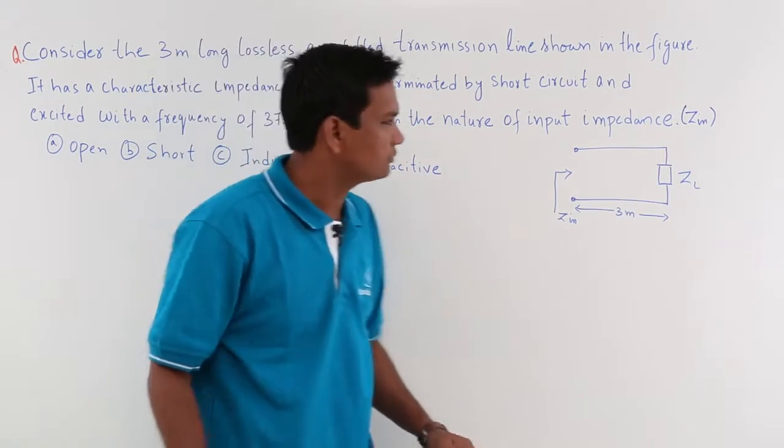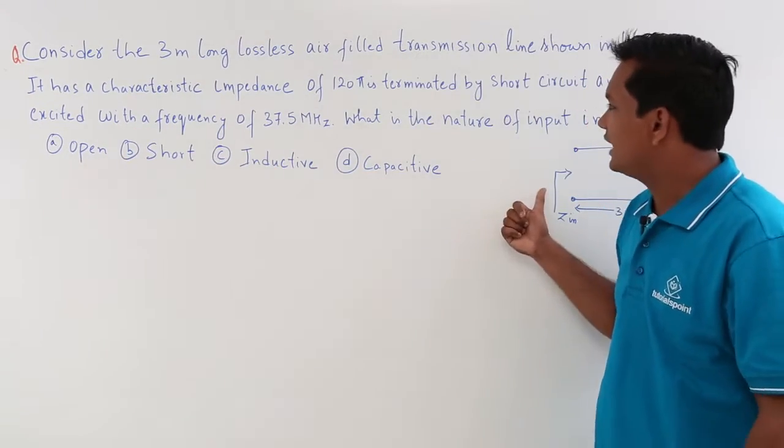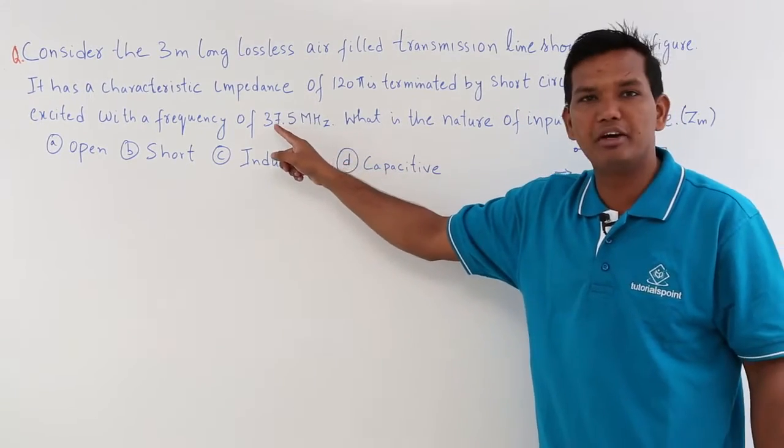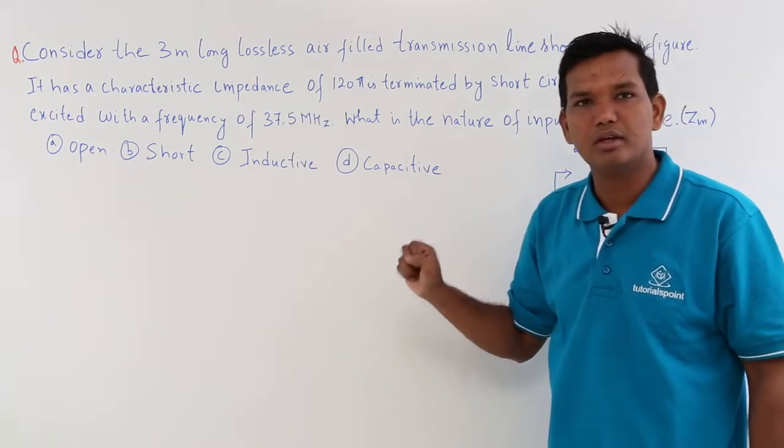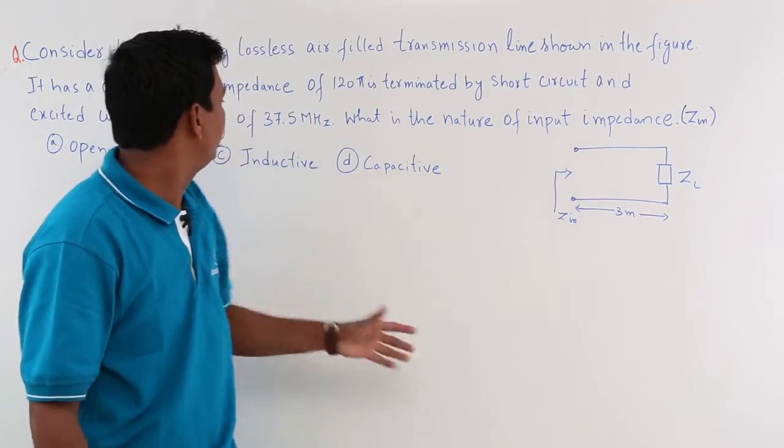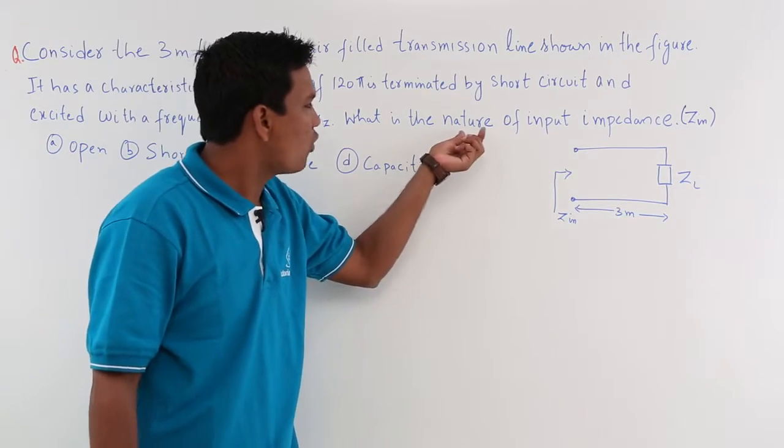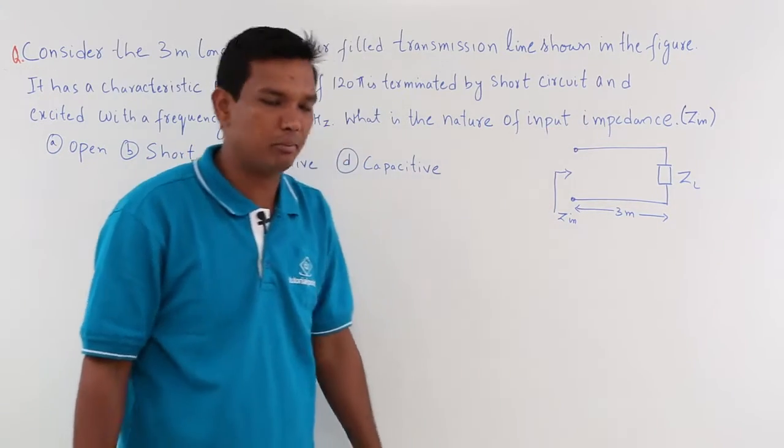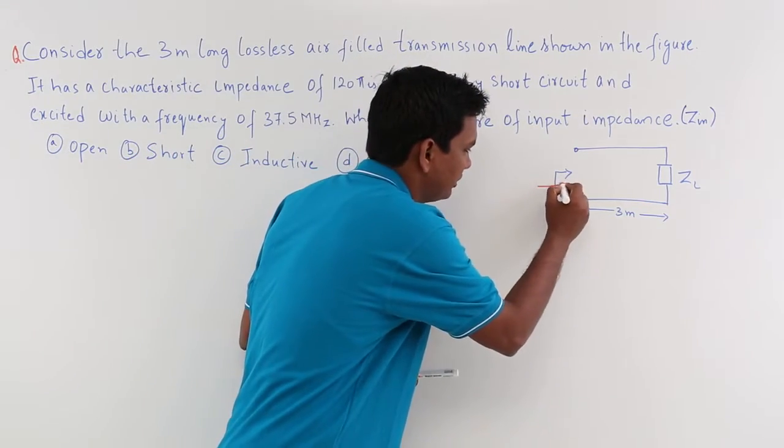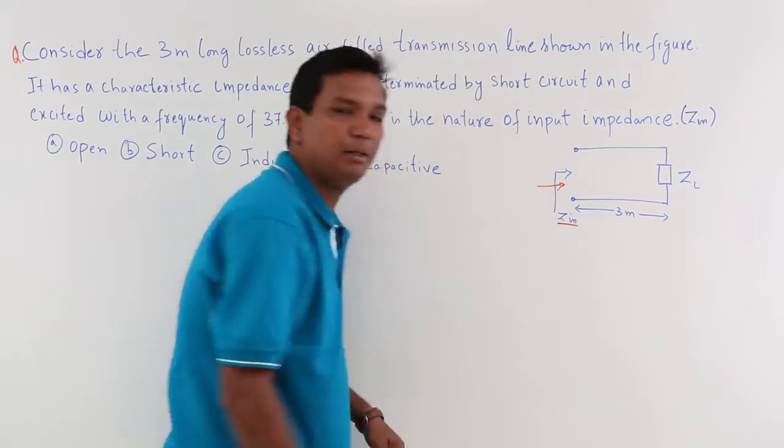This circuit has been excited with a frequency of 37.5 megahertz. They are asking us what is the nature of input impedance. It means if I look from here, what is the nature of the input impedance?